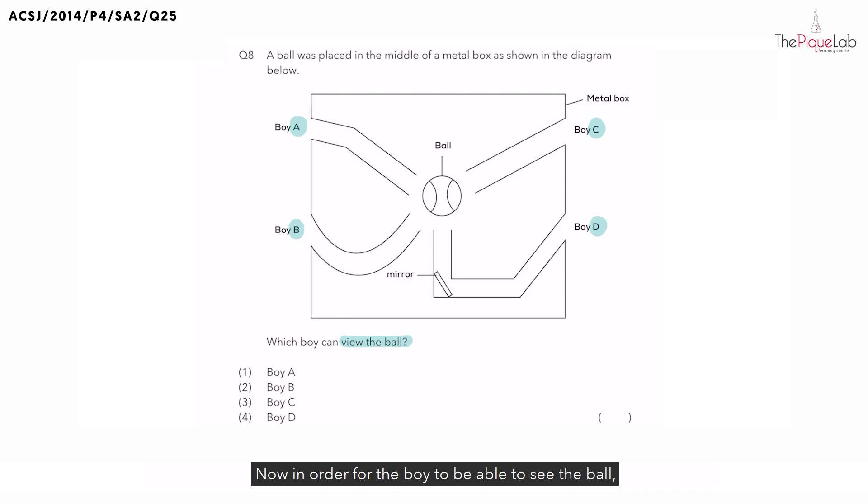Now in order for the boy to be able to see the ball, light reflected off the ball must be able to travel into the boy's eyes. And remember, the important property of light is that light travels in a straight line.